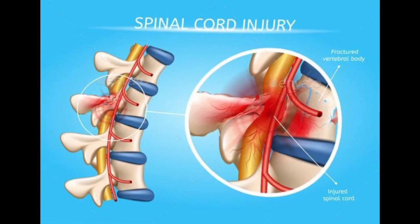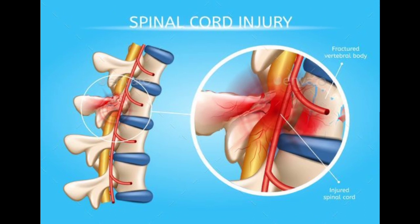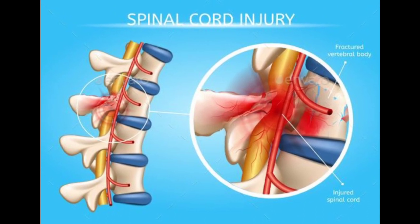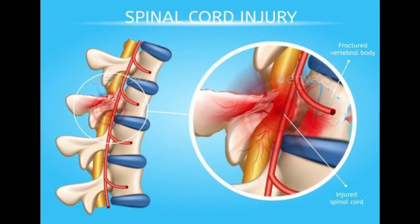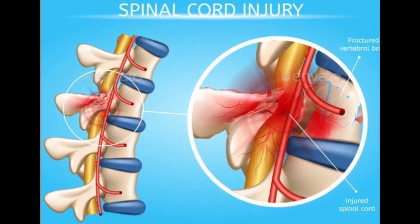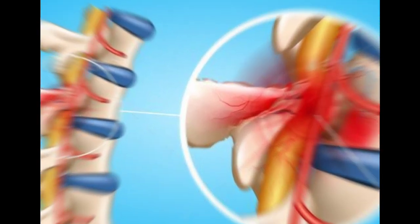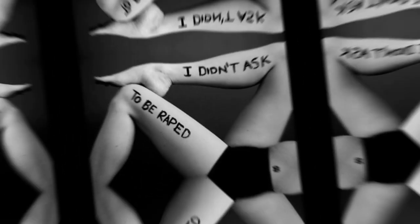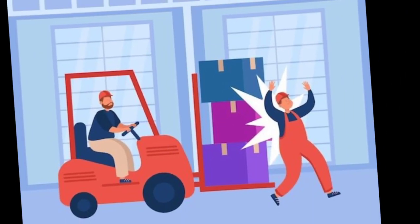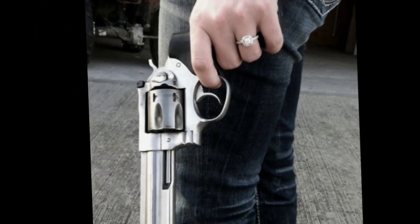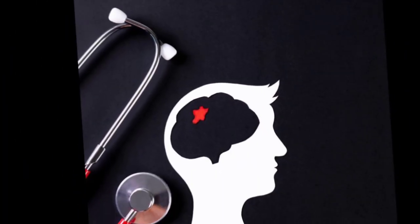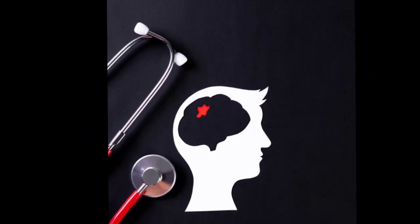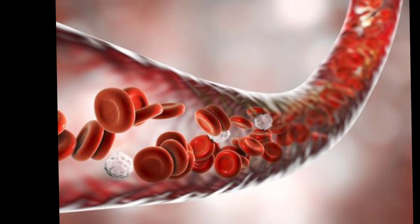According to the National Spinal Cord Injury Statistical Center, there are 12,500 new cases of SCI each year in North America. More than 90% of SCI cases are traumatic, caused by incidents such as motor vehicle accidents, violence, sports injuries, falls, work-related accidents, and gunshot wounds. Non-traumatic causes include infection, tumors, and insufficient blood flow.